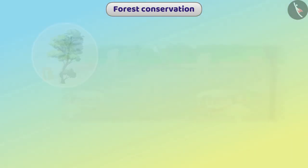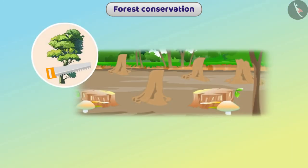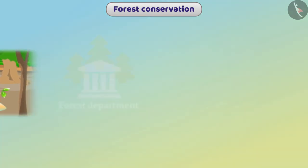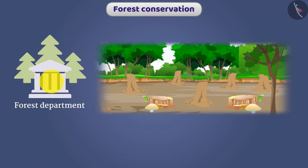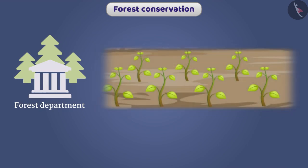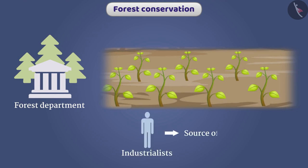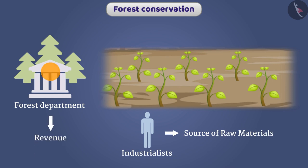The British over-exploited the forest. When control of the forest went to the forest department of the government, forest areas were destroyed and the same type of trees were planted on them. This gave industrialists a source of raw materials and revenue to the forest department.